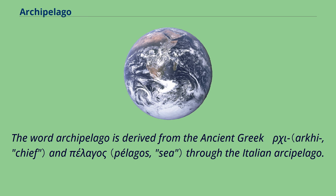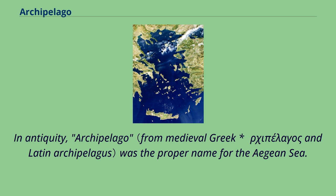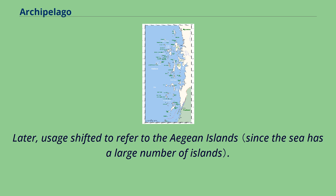The word archipelago is derived from the ancient Greek through the Italian 'arcipelago'. In antiquity, archipelago was the proper name for the Aegean Sea. Later, usage shifted to refer to the Aegean Islands.